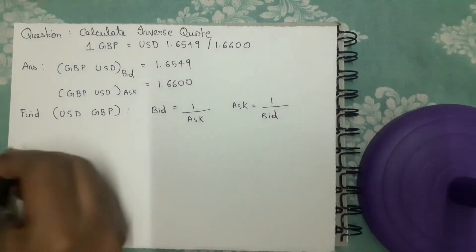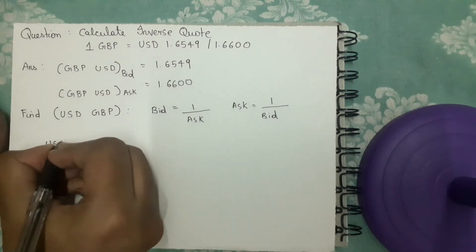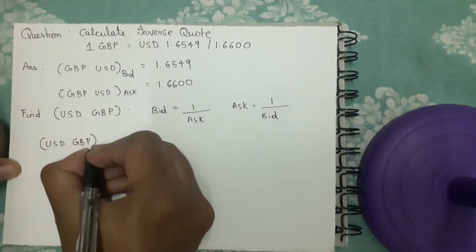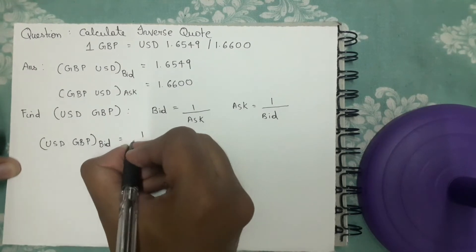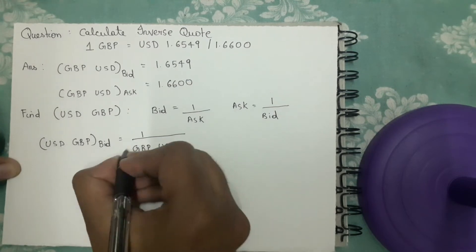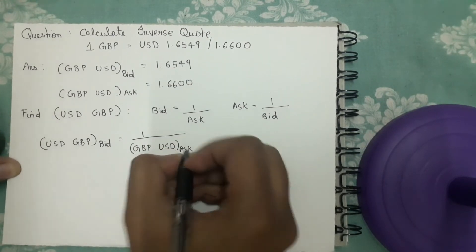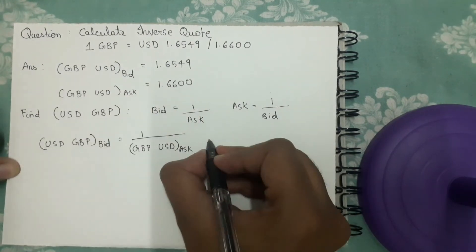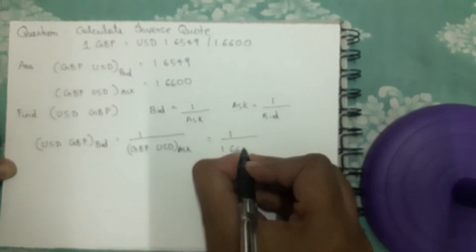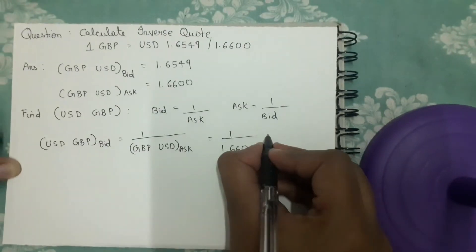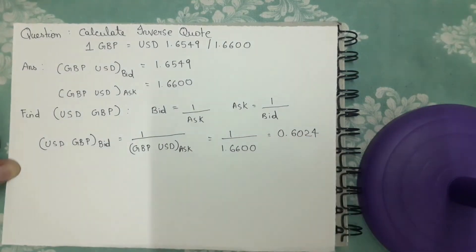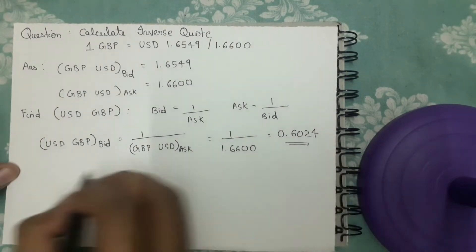To find USD/GBP bid rate, we use the formula: bid rate equals 1 by the ask rate, which would be 1 by 1.6600, which comes to 0.6024. This is the USD/GBP bid rate.